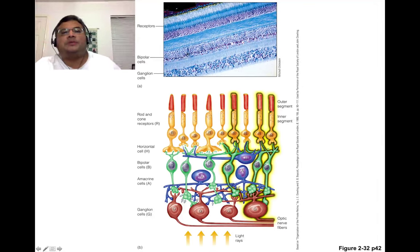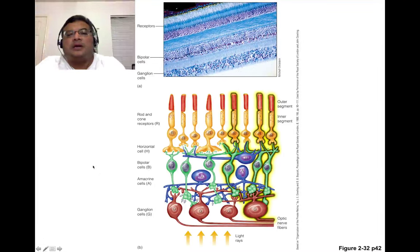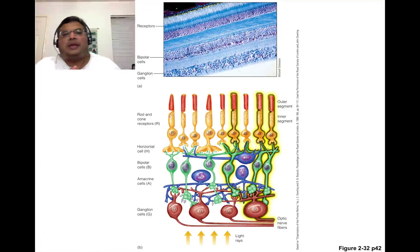What you see at the top are the receptors, rods and cones, and then you see a layer of bipolar cells and a layer of ganglion cells. And if you look at the little cartoon drawing underneath, you'll see a more stylized version of what you're looking at.